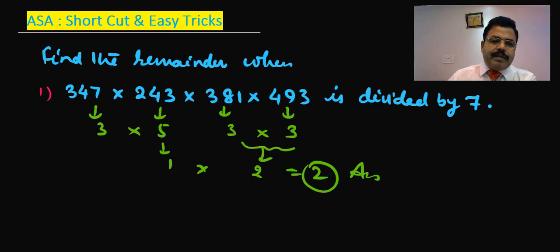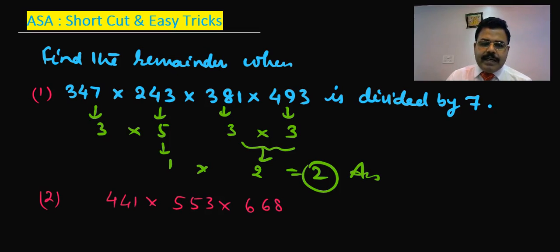Now the next question is suppose you have a number like this: 441 multiply by 553 multiply by 668 multiply by 462 is divided by 11.